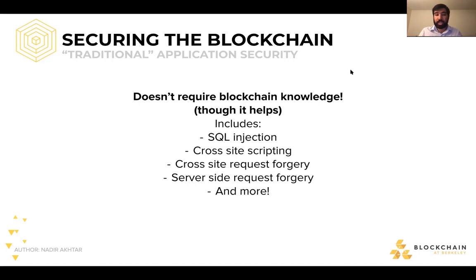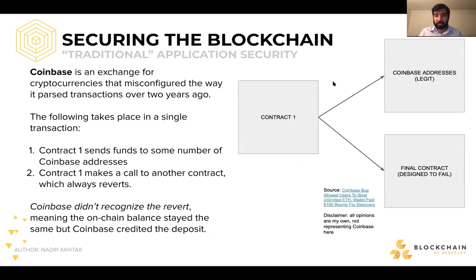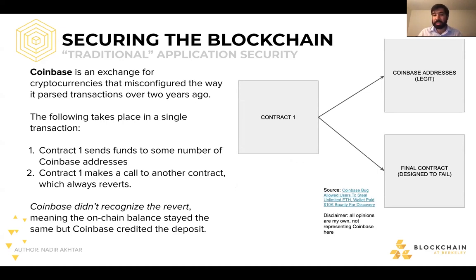Integration security primarily involves asking: how are we tracking balances? How are we sending calls to the blockchain? How are we ensuring that what happens on-chain is correctly represented by what we consider to be the truth? I'll give an example from something publicly disclosed by Coinbase — again, just an interesting case study. I'm not representing Coinbase; anything I'm saying is just me trying to give a pragmatic view of what happened.